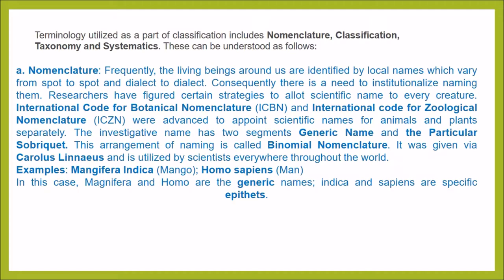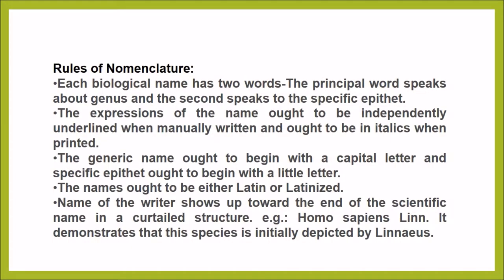For example, Mangifera and Homo are the generic names, and Indica and Sapiens are specific epithets. The rules of nomenclature: each biological name has two words — the first word speaks about the genus and the second word speaks to the specific epithet. The expressions of the name ought to be separately underlined when handwritten and in italics when printed. The generic name ought to begin with a capital letter and the specific epithet with a small letter. The names ought to be either Latin or Latinized. The name of the author appears towards the end of the scientific name in abbreviated form. Example: Homo sapiens Lin., demonstrating that this species was originally described by Linnaeus.